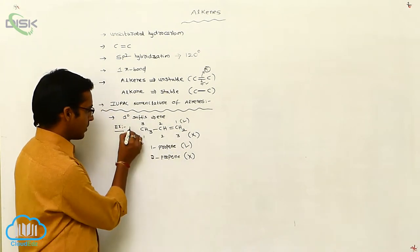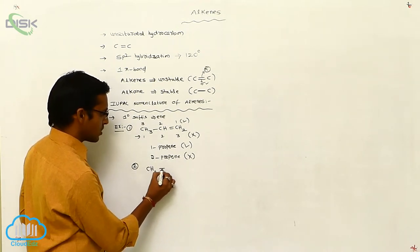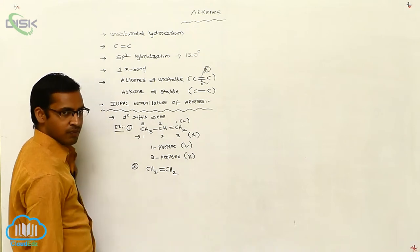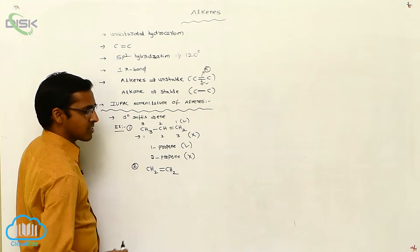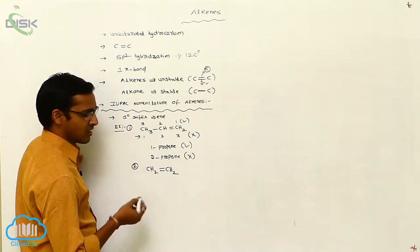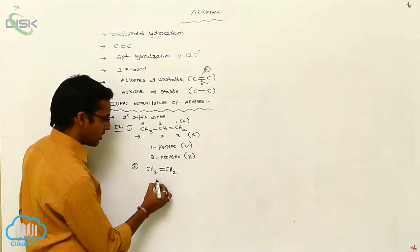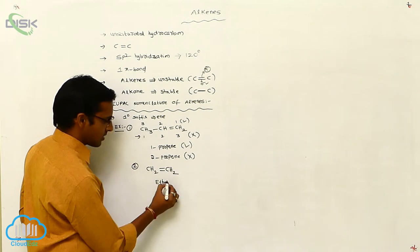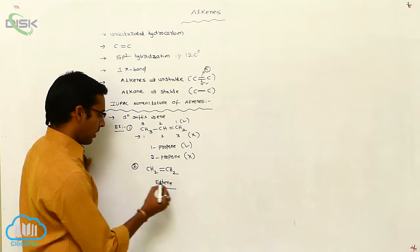For the first alkene example: 2 carbons are present. With 2 carbons, the root word is 'eth', and the primary suffix is '-ene', so the name is ethene. This is your first alkene.